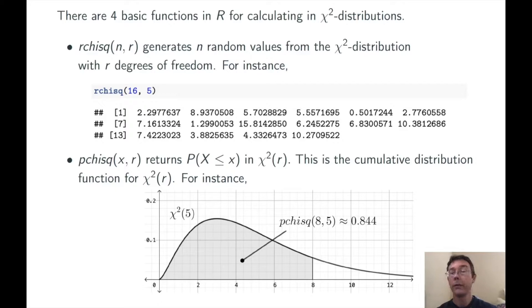For example, pchisq of 8 comma 5 gives back the probability of randomly getting a value less than or equal to 8 in chi-squared of 5. It's represented by this shaded area and the value is about 0.844.